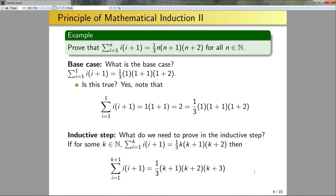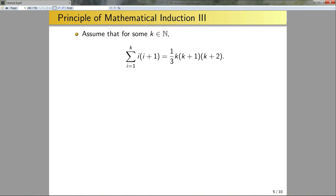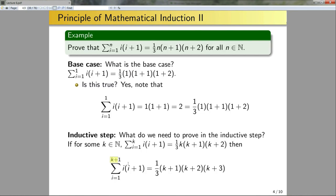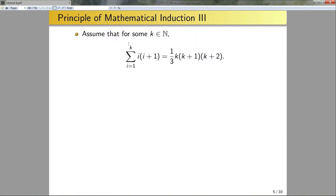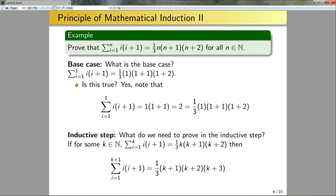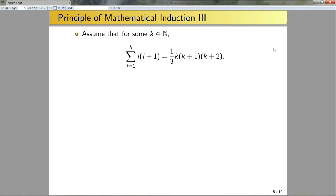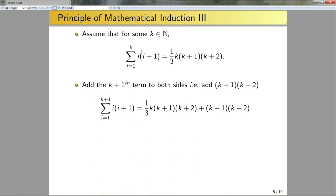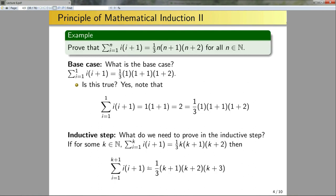In general how to proceed depends on the particular problem. We assume for some k that the sum formula holds. The difference between the sum to k+1 and the sum to k is the extra term (k+1)(k+2). So I can add that term to both sides of the equation. Adding (k+1)(k+2) to both sides: on the left side I absorb it into the sum by incrementing the index, and on the right side I have the original expression plus the extra term.